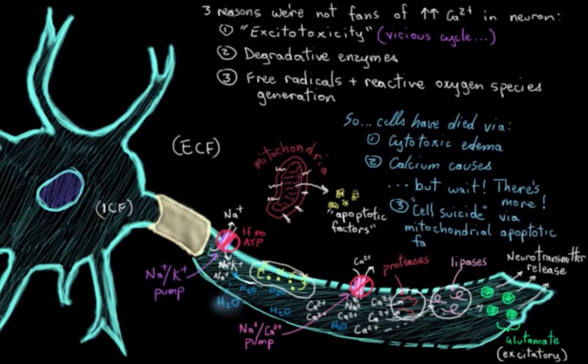So there's a look at some of the major events that happen as part of the ischemic cascade and three ways that cells might die as a part of the ischemic cascade.